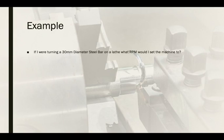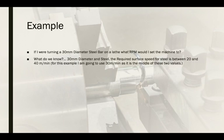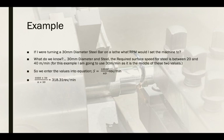As an example, if we are turning a 30mm diameter steel bar on a lathe, what RPM would we set the machine to? We know the diameter is 30mm and it is steel. The required surface speed for steel is between 20 and 40 meters per minute — from the chart at the end of this presentation. For this example we'll use 30 meters per minute as it is in the middle of the two values. Entering the values: 1000 times 30, divided by pi times 30, gives us 318.31 revolutions per minute.